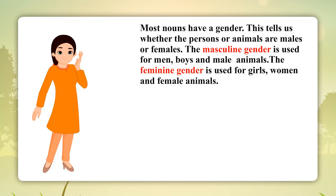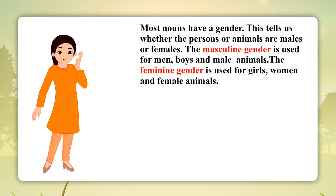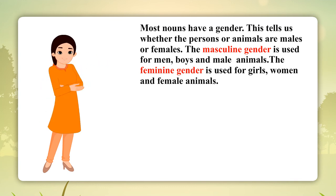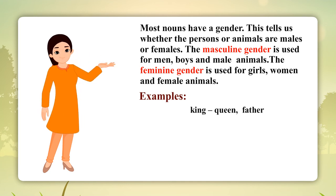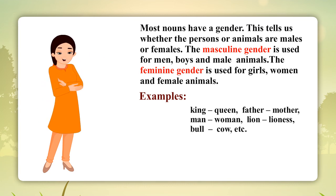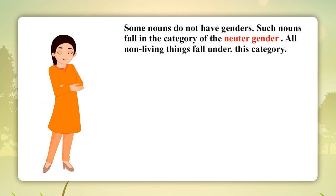Nouns Gender: Most nouns have a gender, which tells us whether persons or animals are male or female. The masculine gender is used for men, boys, and male animals. The feminine gender is used for girls, women, and female animals. Some nouns do not have genders — such nouns fall in the category of the neuter gender.